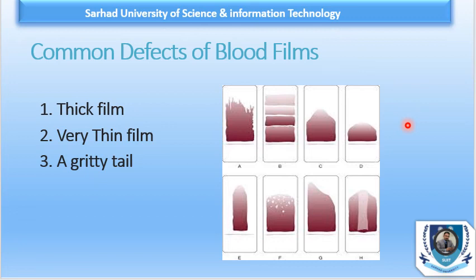In summary, we have two types of slides: the cover slip slide, which is not very common, and the glass slide, which is very common. We discussed how we make them, the advantages and disadvantages, the best area for morphology, the differentiation of head, body, and tail of a peripheral blood smear, and the common defects of a blood film. Thank you very much for listening. In the next lecture we will cover staining of the blood film. See you soon, inshallah. Allah Hafiz.